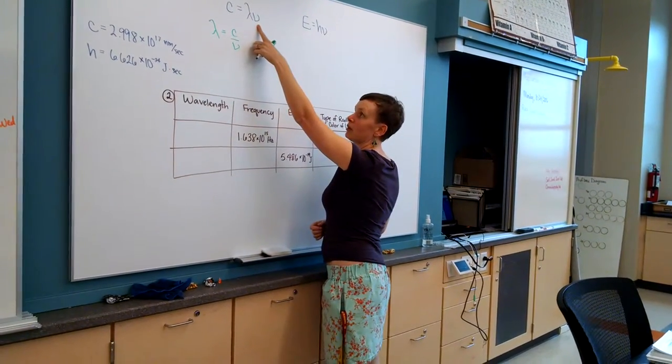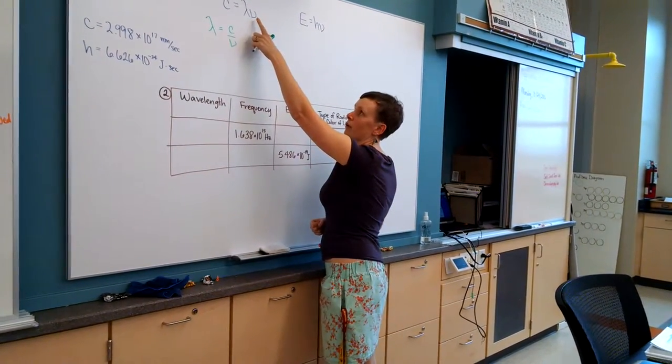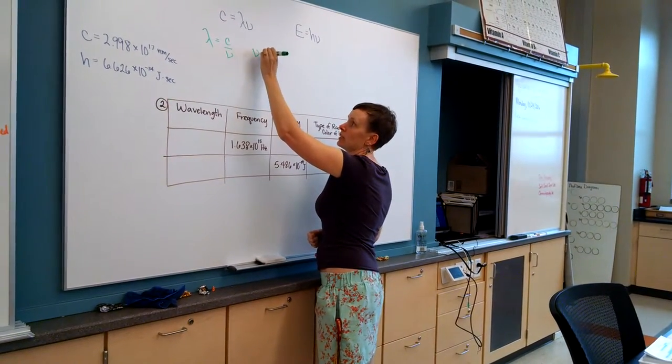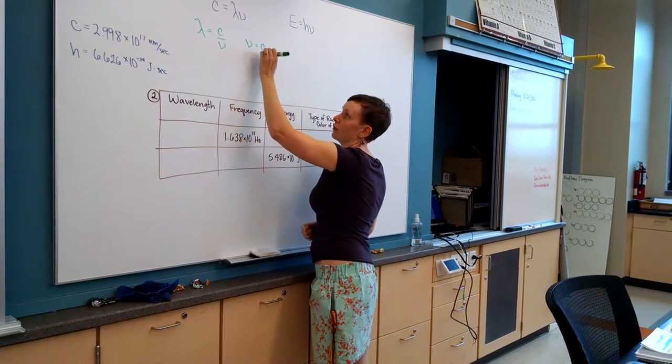Part B has to solve this same equation for frequency. So if I want frequency by itself, we're going to divide both sides by wavelength, and we'll end up with frequency equals speed of light over wavelength.